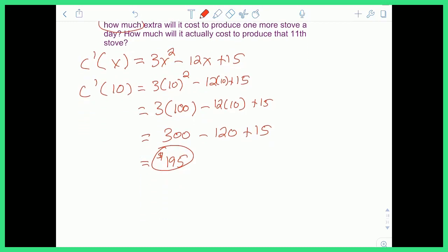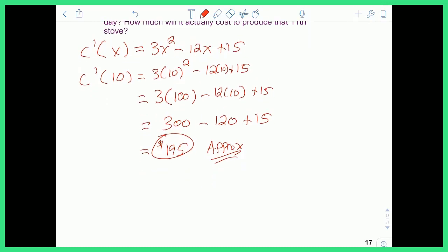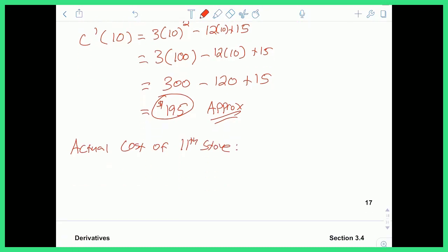Well, let's calculate how much it actually takes, because this is an approximation. To calculate the actual cost of the 11th stove, all I have to do is just calculate what is the cost of producing 11 stoves minus the cost of producing 10.